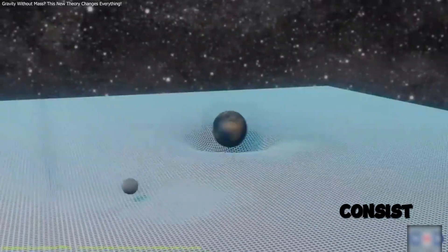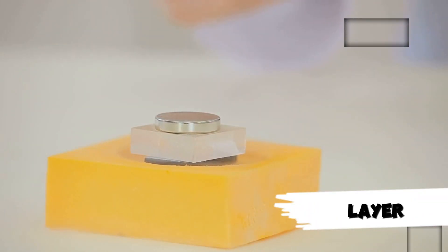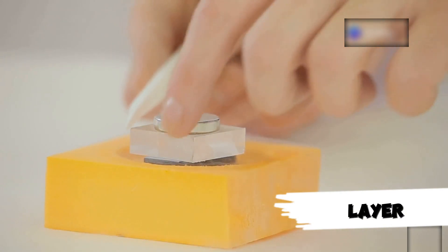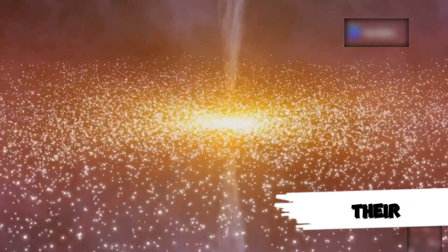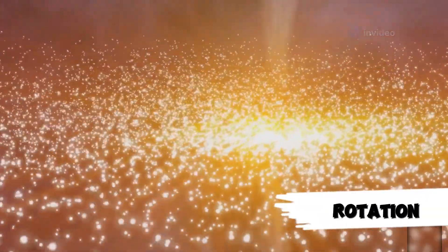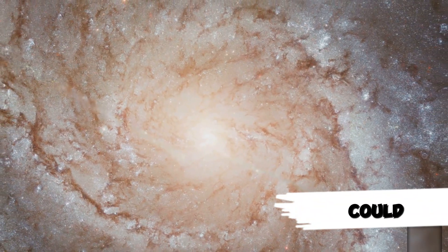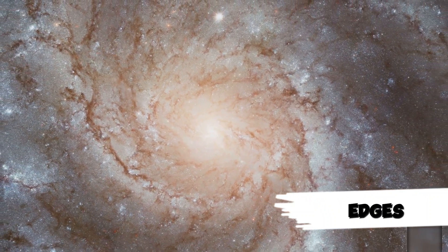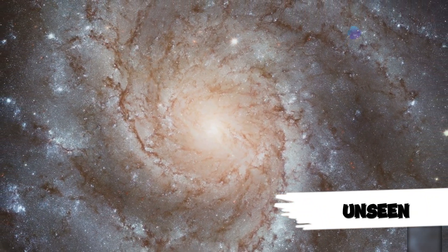Liu explains the shells consist of a thin inner layer of positive mass and an outer layer of negative mass. Despite their zero net mass, they produce gravitational forces that could account for galactic rotation patterns. This theory could explain why stars at galaxy edges maintain high speeds without invoking unseen dark matter.